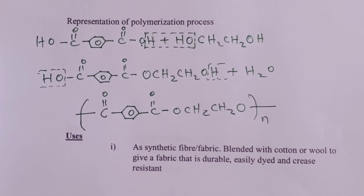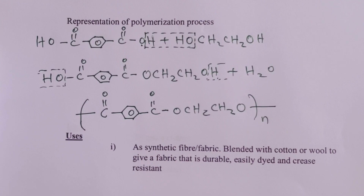Terylene is a synthetic fiber or fabric which we usually blend with cotton or wool to give a fabric that is durable, easily dyed, and does not need ironing. With that, we have come to the end of this short video. We have taken you through the four condensation polymers usually discussed in Organic Chemistry Form 4. Thank you very much.